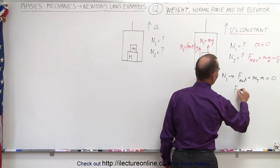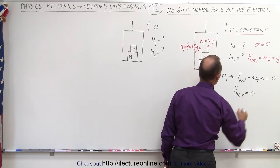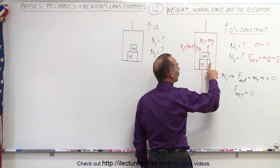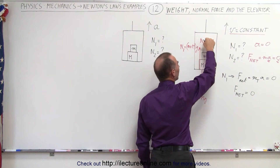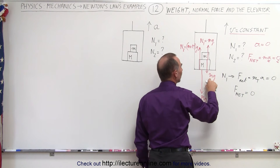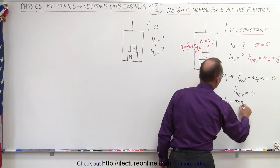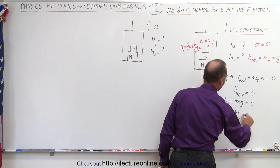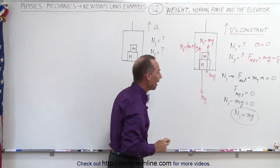So f_net must equal zero, and the net force acting on this boundary is going to be the force pushing up — which is the normal force — minus the force pulling down, which is mg. So we can say that n1 minus mg equals zero, or n1 is equal to mg, just like we drew on the diagram.